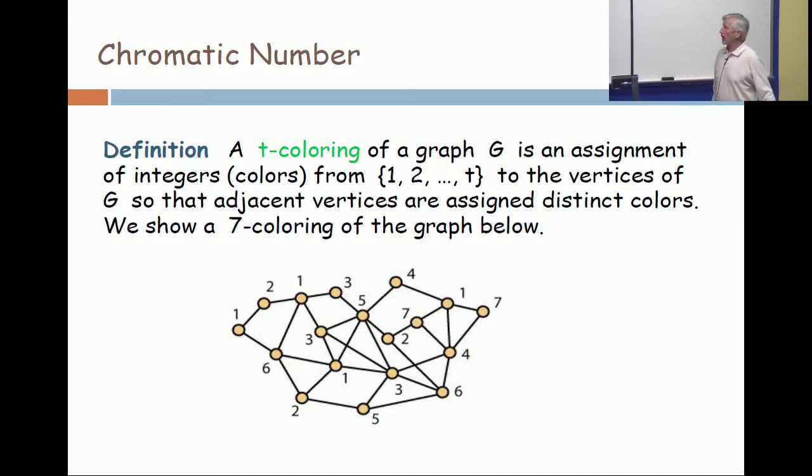We have the notion of a coloring, also called a proper coloring. It's just an assignment of labels to the vertices in a graph. Usually we use positive integers, but that's not necessary. They really can be colors or elements of any set. But the critical thing is that adjacent vertices have to be assigned distinct colors. So this is a seven coloring. In other words, there are seven colors, in this case just the first seven positive integers.